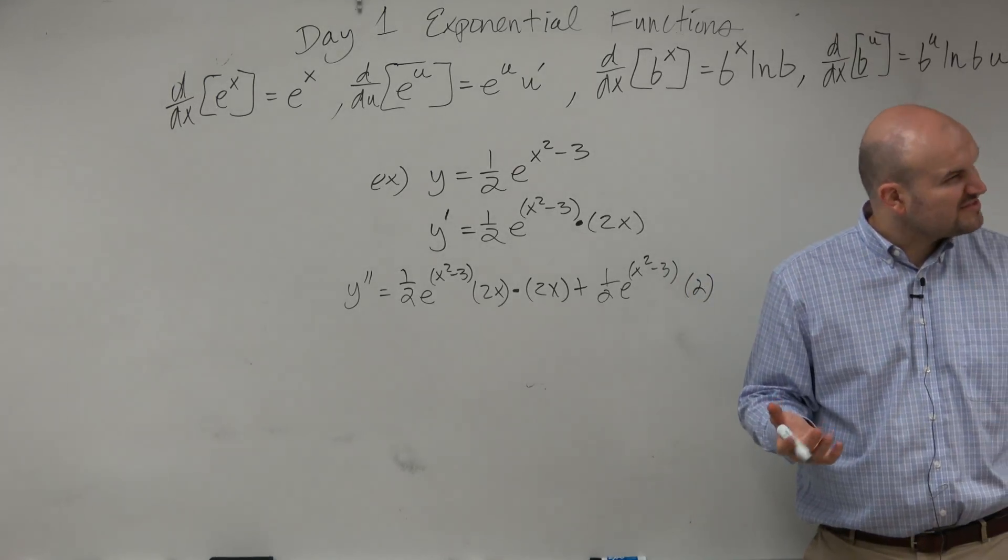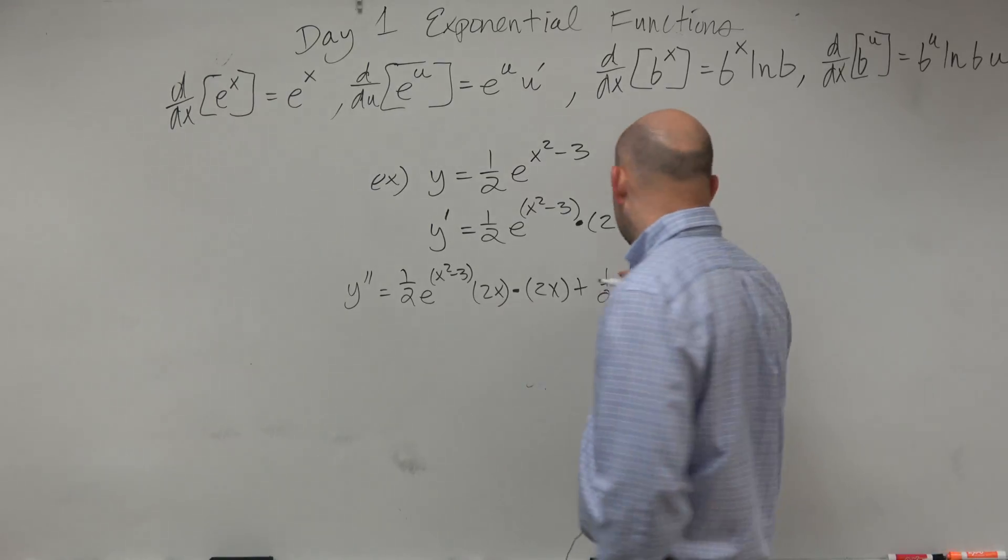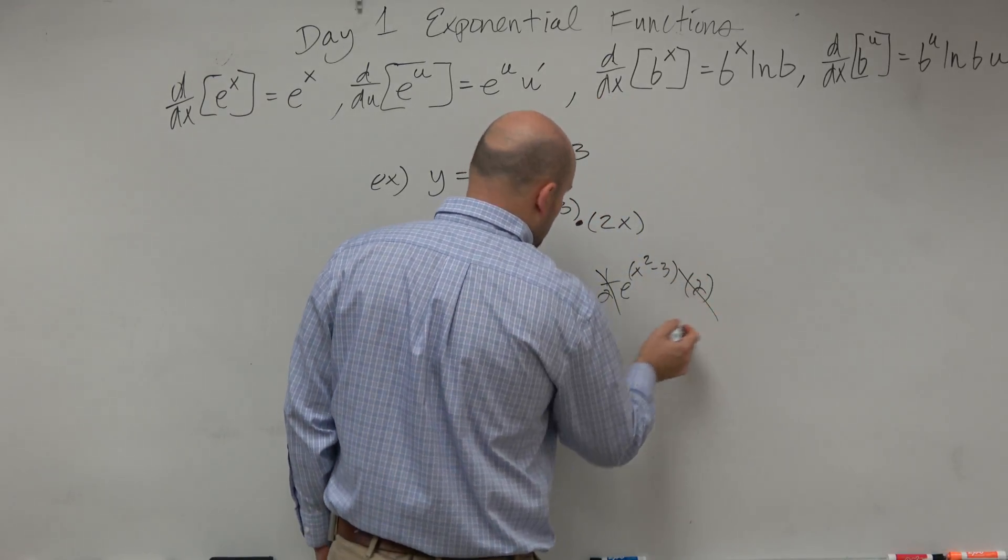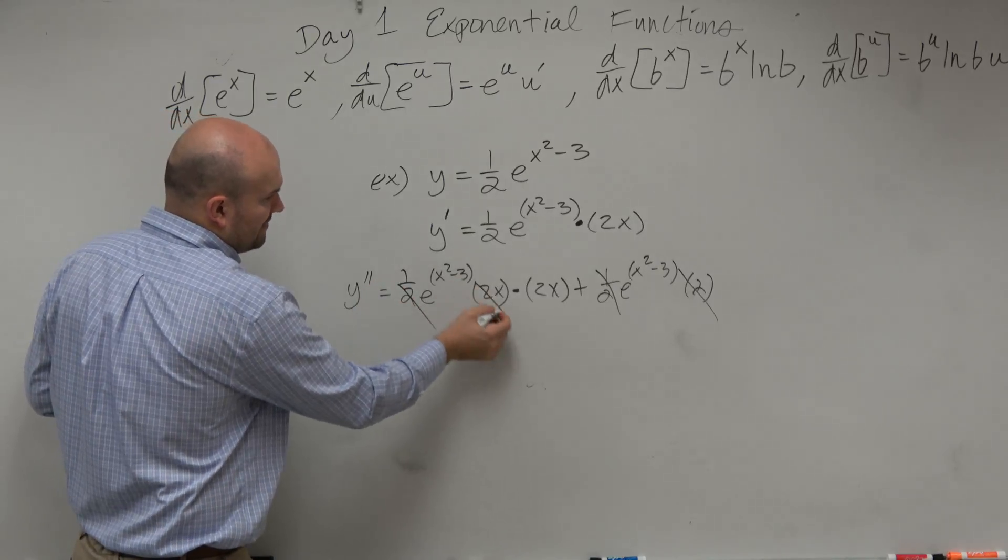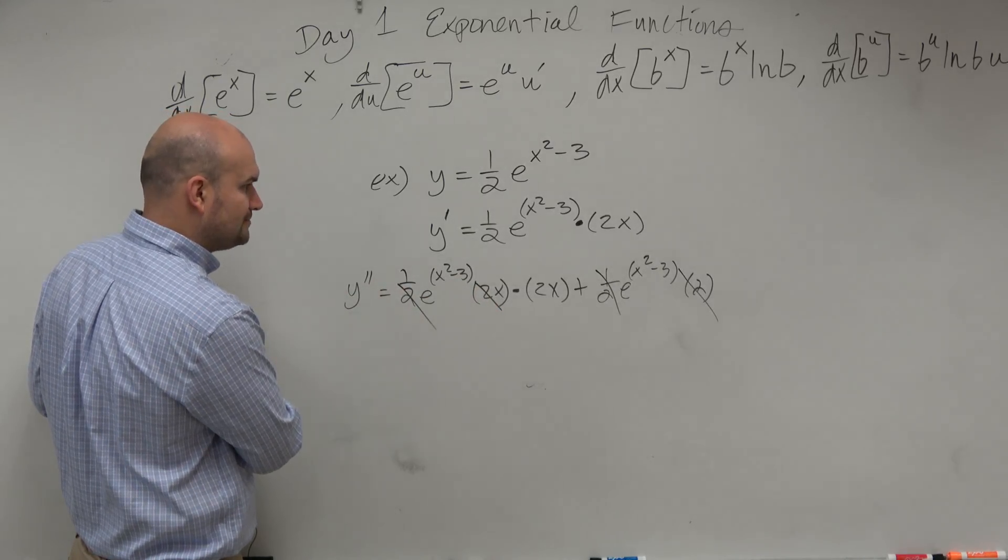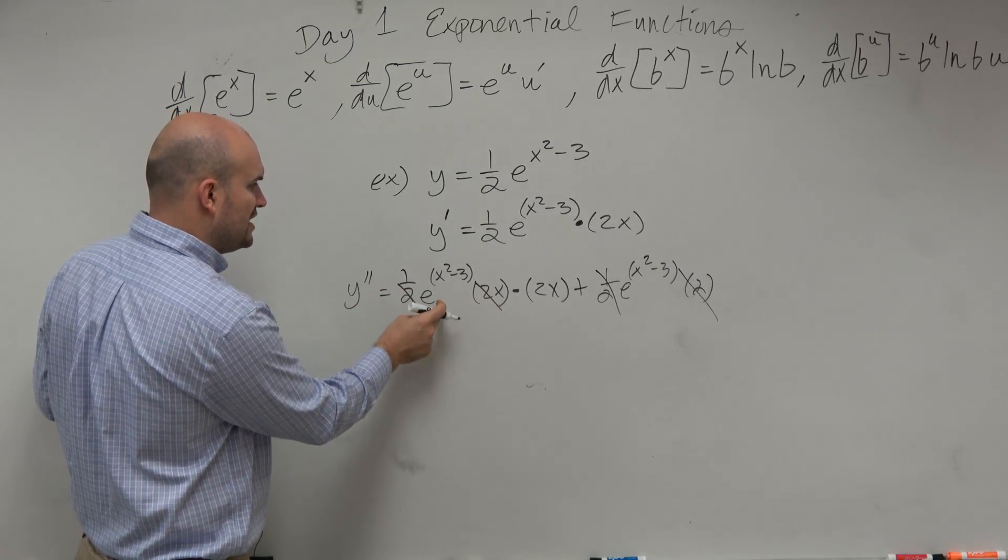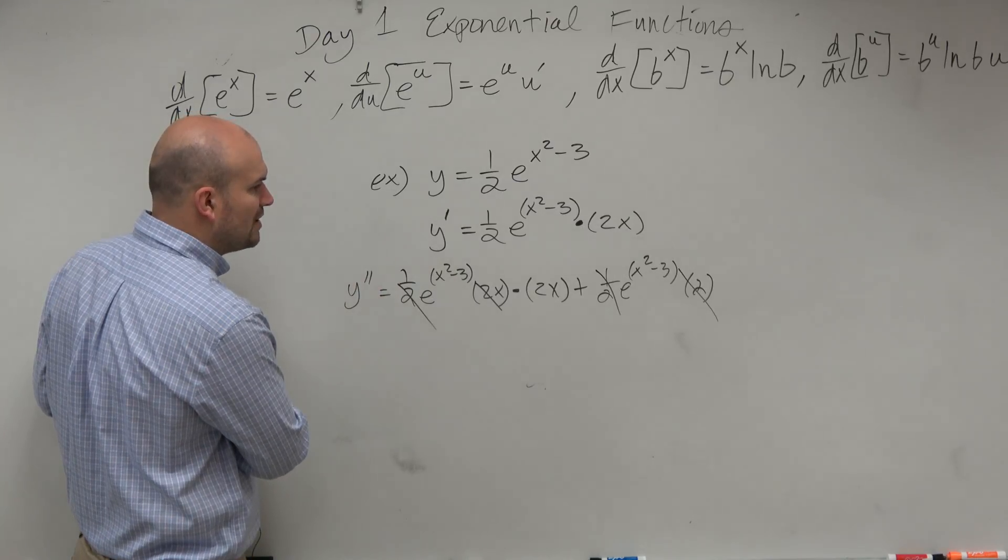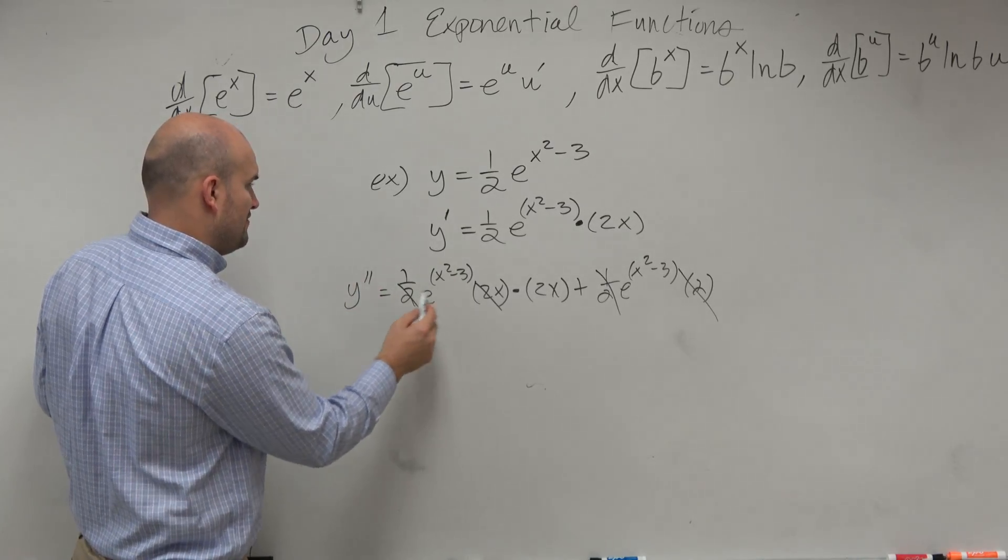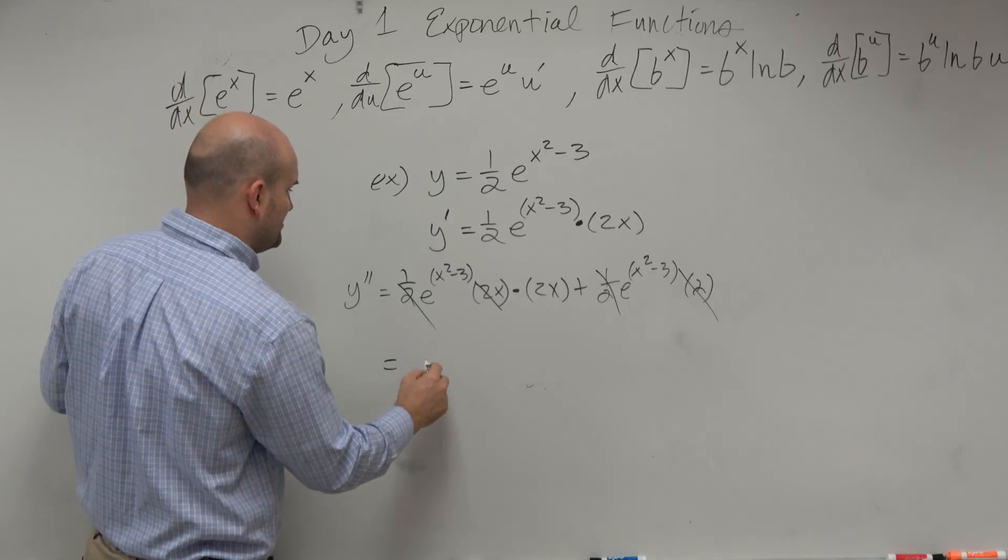Now, obviously, we can simplify some things here, right? So we see that the 1 half and the 2, those are going to multiply to 1. Here, the 1 half and the 2 are going to multiply to 1. And we can see that they both share e to the x squared minus 3. So if I was going to... Actually, let's simplify this so it's a little bit easier to see.